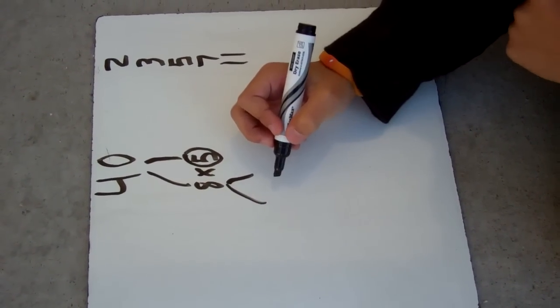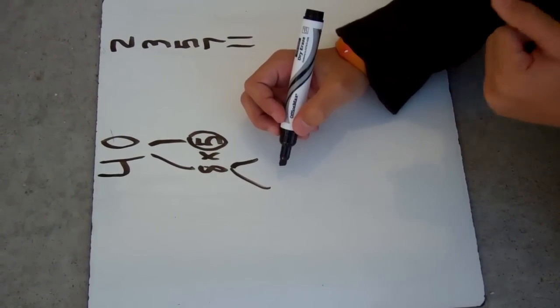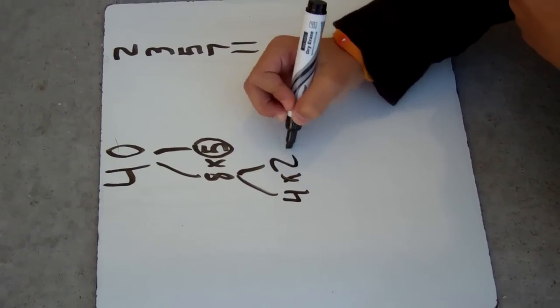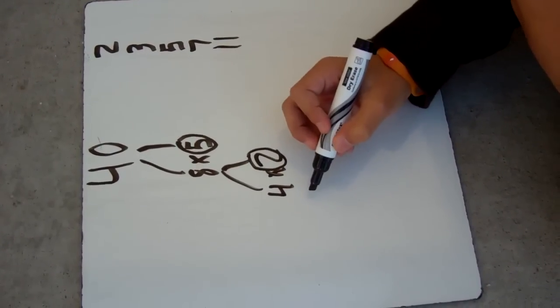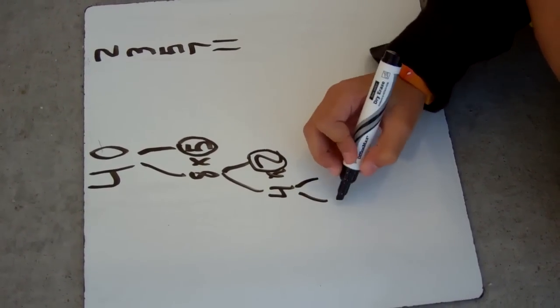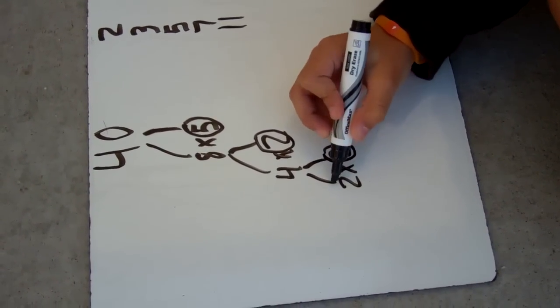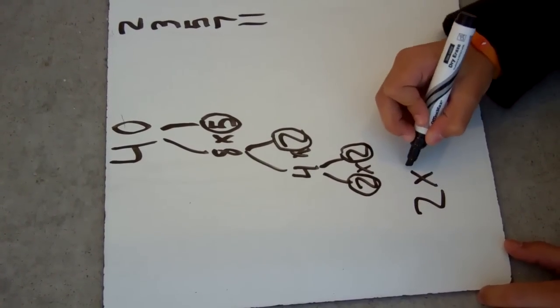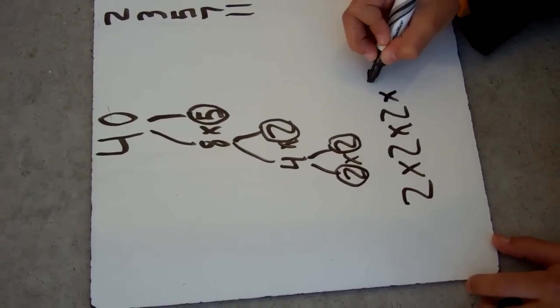Then we think about what equals 8. We think 4 times 2. 2 is a prime number, circle it. What equals 4? 2 times 2. We circle these. And we write 2 times 2 times 2 times 5.